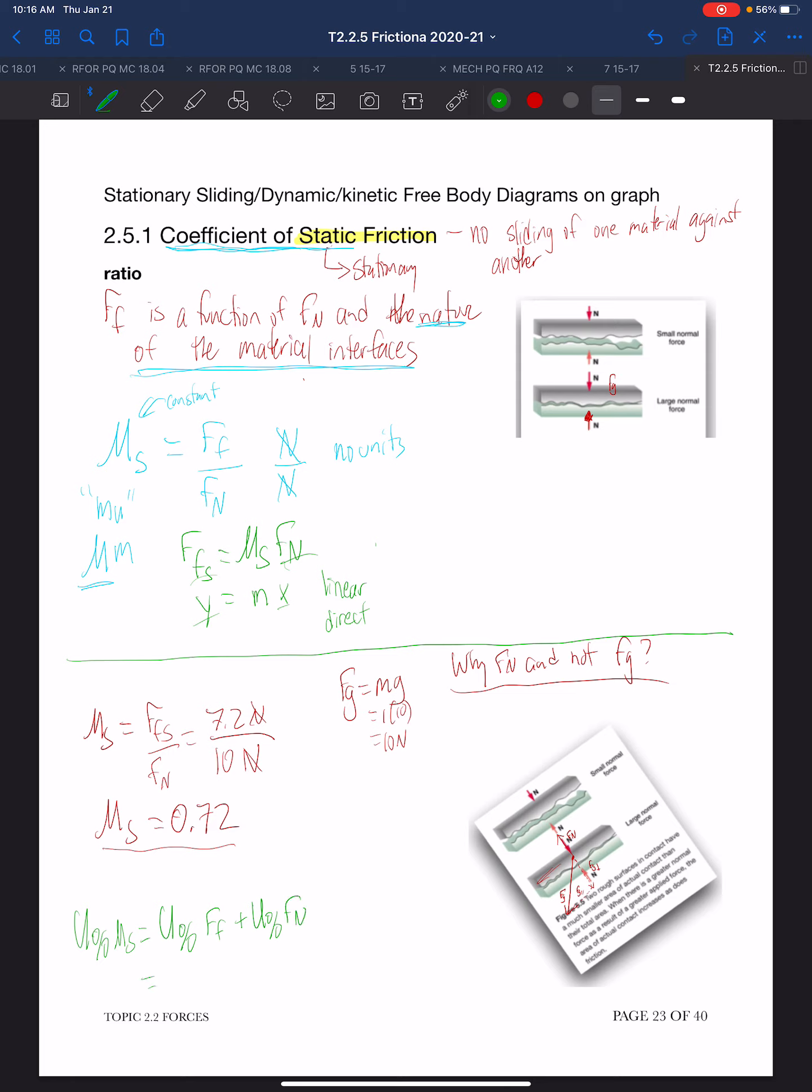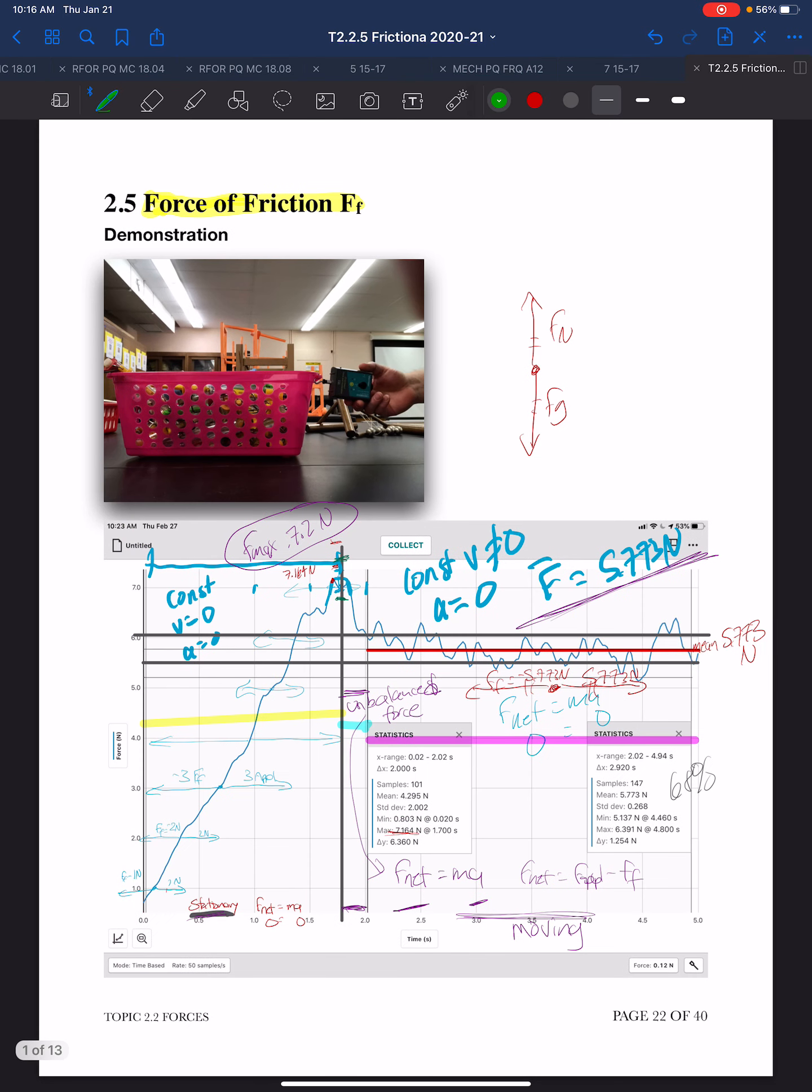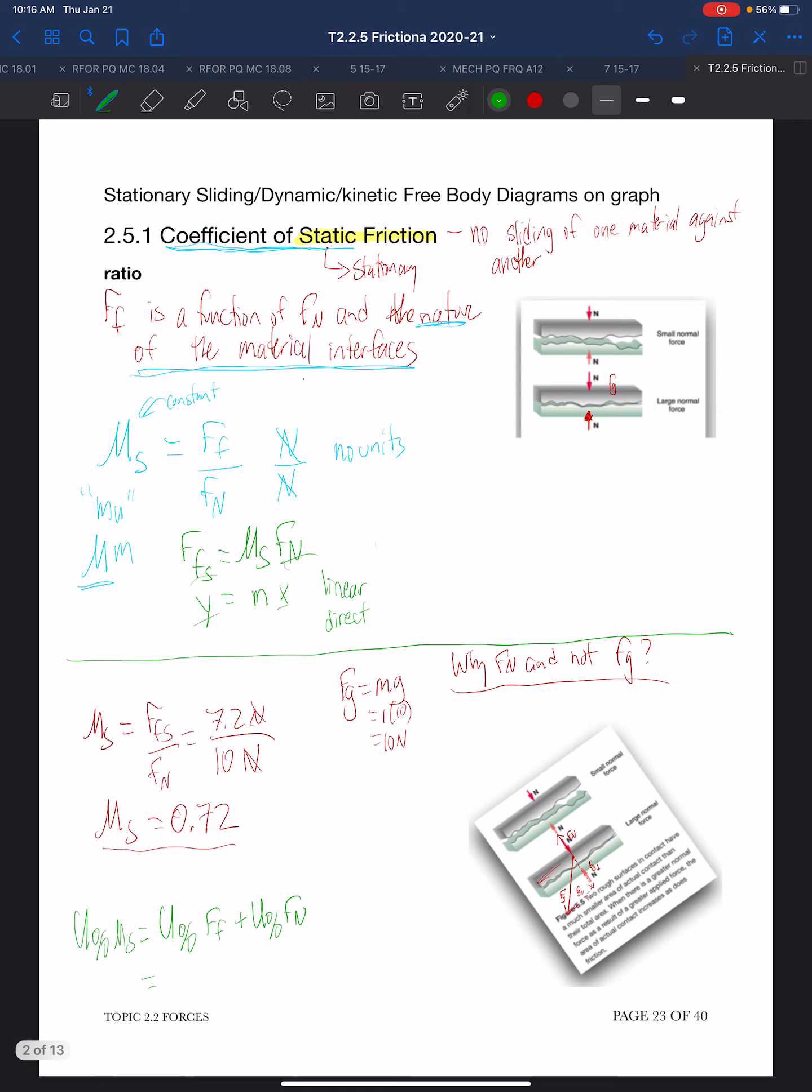This force of friction, the 7.2 newtons, when we looked at it, we said it might be plus or minus 0.25. It could be a little bit higher, maybe 7.25, and maybe down as low as 7.25. So that percent uncertainty would be 0.25 divided by 7.2.